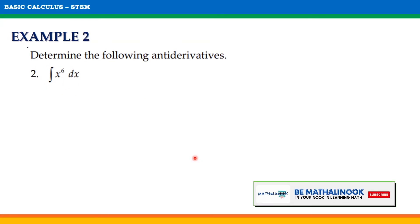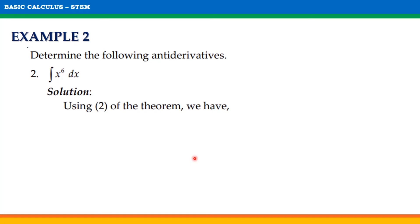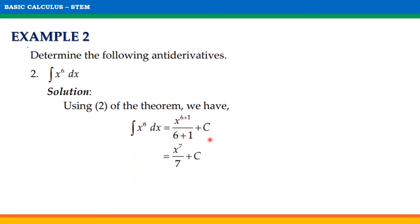Let us have another example. Solve for the indefinite integral of x raised to 6 with respect to x. Using theorem number 2, we will have the indefinite integral of x raised to 6 with respect to x equal to x raised to 6 plus 1 divided by 6 plus 1 plus the arbitrary constant c. Simplifying, we will have x raised to 7 divided by 7 plus c.